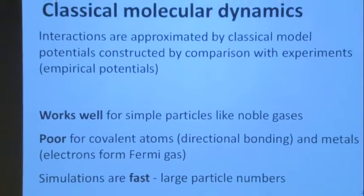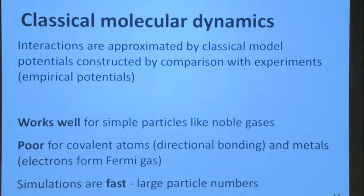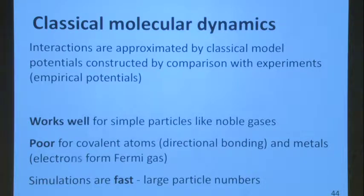The Born-Oppenheimer approximation says that the motion of nuclei and electrons can be separated, so we only look at the nuclei. If you want to look at electrons too, you'd use ab initio MD. Classical MD works very well for simple particles, especially for noble gases. It does not work well for covalent atoms without approximations. Classical MD is fast — it can handle large system sizes and relatively long timescales, making it a good approximation for our systems.